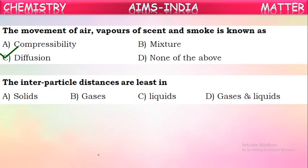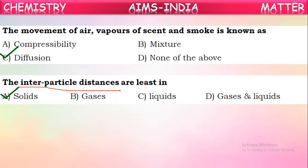Question 9: Inter-particle distances are least in which state? In which state are particles very closely packed? The distance between adjacent particles is called inter-particle distance, and this will be least in the solid state — because in solids, particles are very tightly packed and very close to one another.